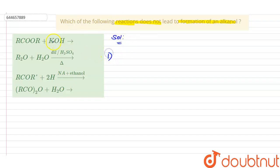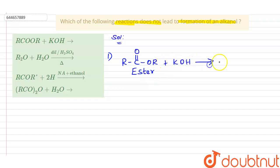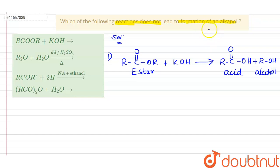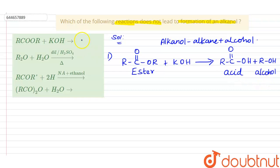The first option is RCOOR plus potassium hydroxide. RC double bond O-OR is nothing but an ester. When the ester undergoes hydrolysis in the presence of potassium hydroxide, there will be formation of RC double bond O-OH plus ROH. RC double bond O-OH is an acid, and ROH is an alcohol — that is, alkanol is the combination of alkane plus alcohol. Since ester hydrolysis with KOH produces alcohol, this reaction does produce alkanol, so it is not the answer.